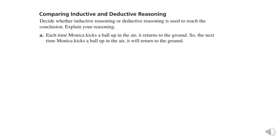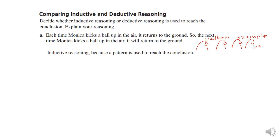We're going to decide whether each example is inductive or deductive reasoning. Every time Monica kicks a ball up in the air, it returns to the ground — she kicked it several times and it always came down. So the next time Monica kicks a ball up in the air, it will return to the ground. She established a pattern through examples, therefore this is inductive reasoning.